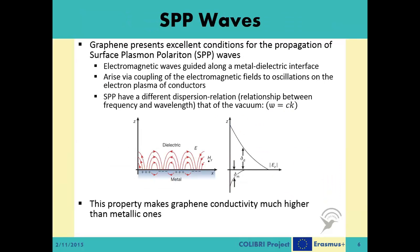Surface plasmon polaritons (SPPs) are electromagnetic excitations propagating at the interface between a dielectric and a conductor, evanescently confined in the perpendicular direction. These electromagnetic surface waves arise via the coupling of the electromagnetic fields to oscillations of the conductor's electron plasma. Surface plasmons (SPs) occur as light-induced packets of electrical charges collectively oscillating at the surfaces of metals at optical frequencies. Under specific conditions, the incident light couples with the surface plasmons to create self-sustaining propagating electromagnetic waves, also known as surface plasmon polaritons.